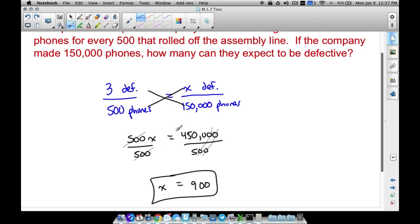But what does this mean? Out of 150,000 phones, they can expect 900 of those phones to be defective. And that's going along with this same rate, which ultimately leads towards a proportion that three out of 500 phones are going to be messed up. That means around 900 out of 150,000 phones will be defective.